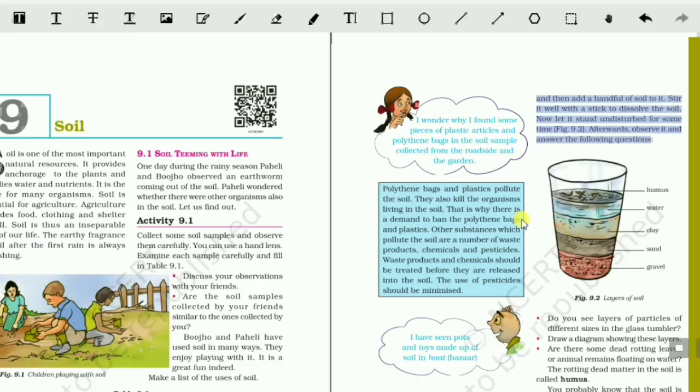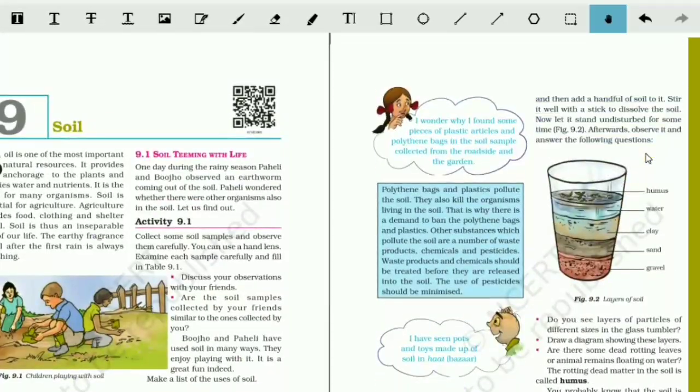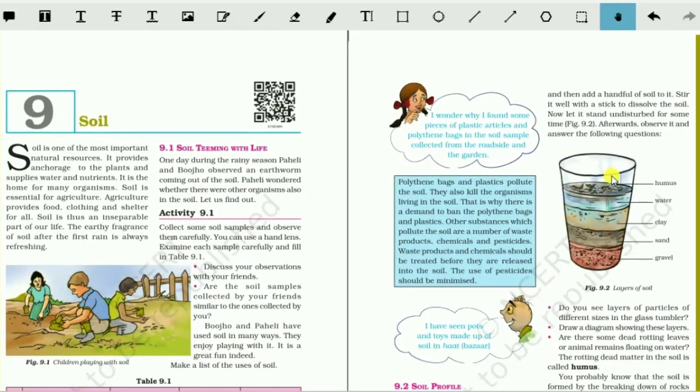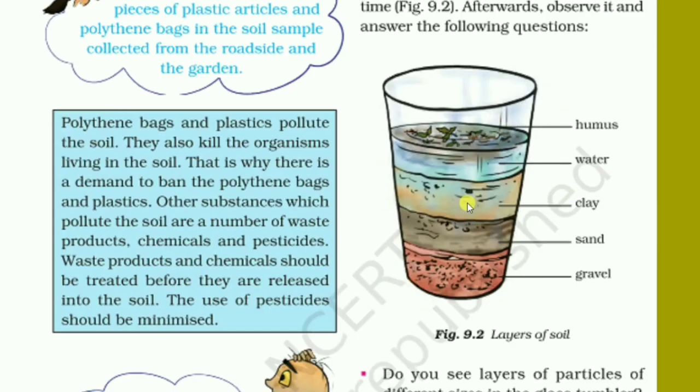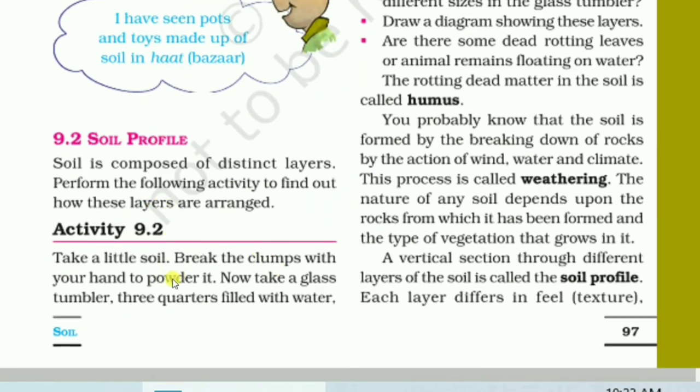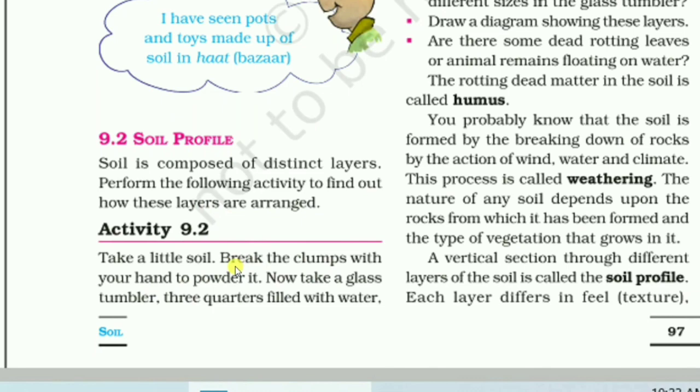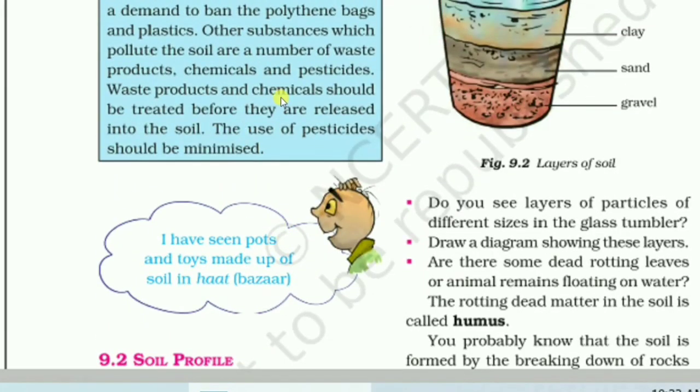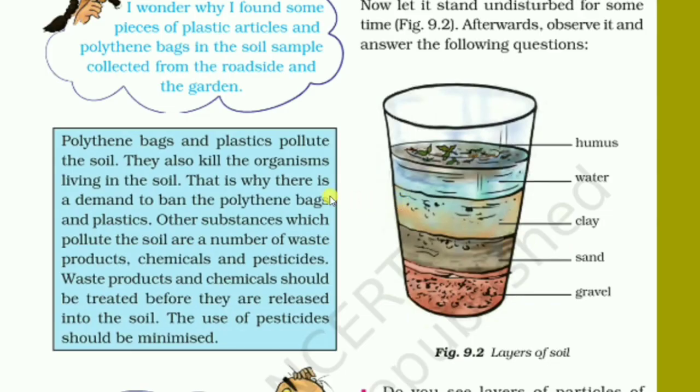So you have to take one glass which is made of glass so that it will be transparent, through that you can watch what is happening inside it. So first of all, three-fourths of it, that means 75 percent, you have to fill with water. According to the instruction, the NCERT has told take some clumps, take the solid soil and break it into powder, then mix it with the water very well.